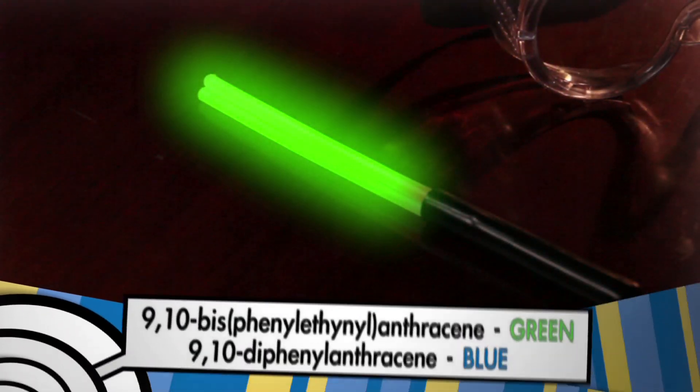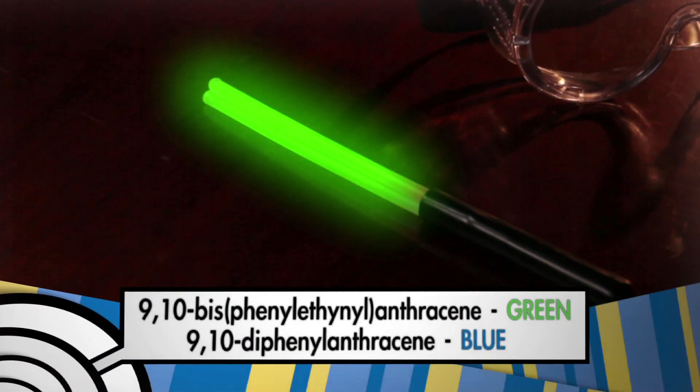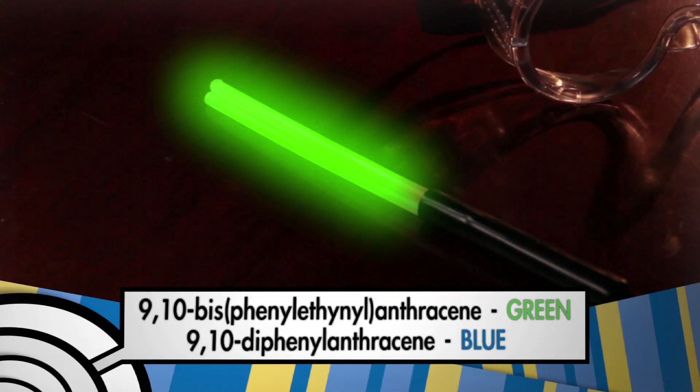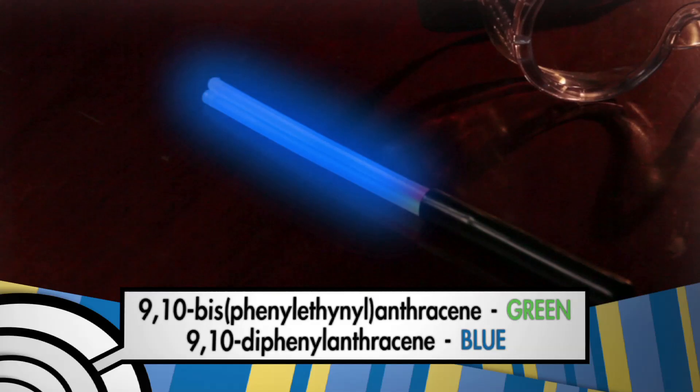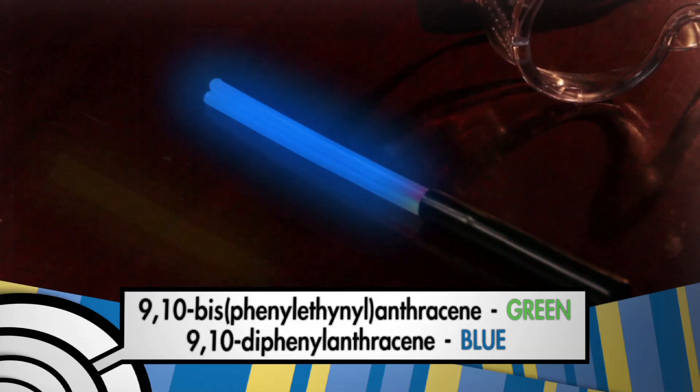Different fluorescing dyes make different colors. For example, the common green in most glow sticks comes from 9,10-bisphenylathinyl anthracene. To get a blue color, you can use a dye known as 9,10-bisphenyl anthracene.